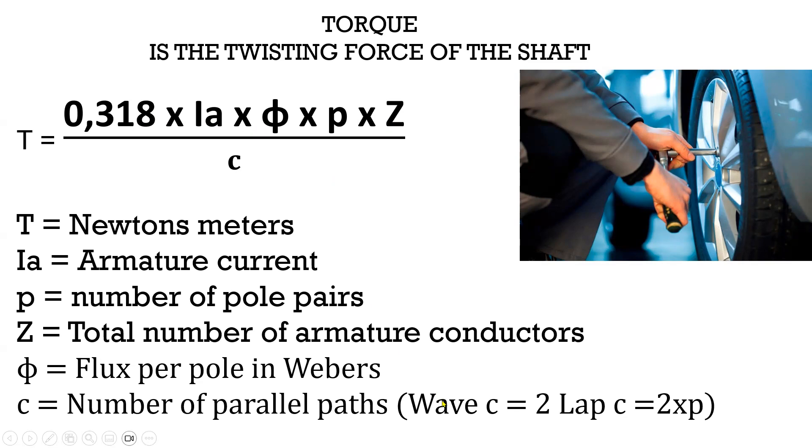If it is wave-wound, C is equal to 2. If it is lap-wound, C is equal to 2 times the number of pole pairs.